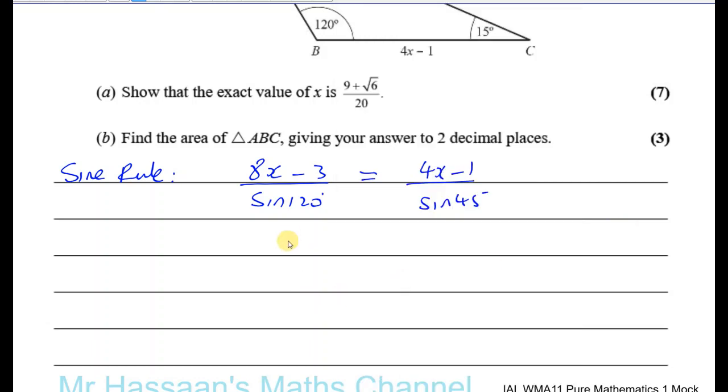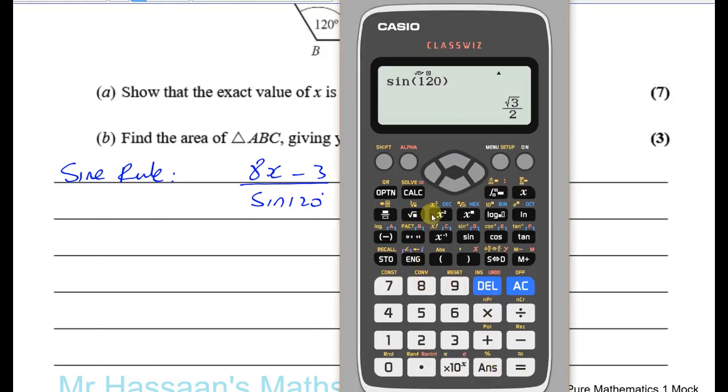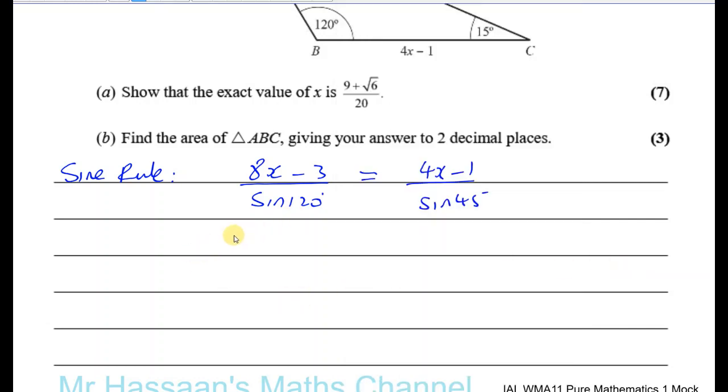And if you're not sure, you can just put in a calculator. It's not a big deal. In degree mode, so we say the sine of 120 is going to be root 3 over 2, and we want to keep it in this form, and the sine of 45 is root 2 over 2. You should know these exact values by now. So let me first of all rearrange this. So I have sine 45 times 8X minus 3, just cross multiplying, equals sine 120 times 4X minus 1. As we just said, sine 45 is root 2 over 2 times 8X minus 3 equals sine 120 is root 3 over 2 times 4X minus 1.